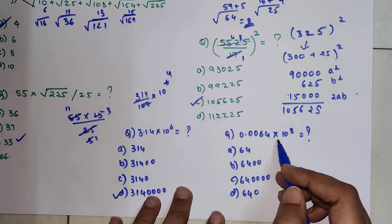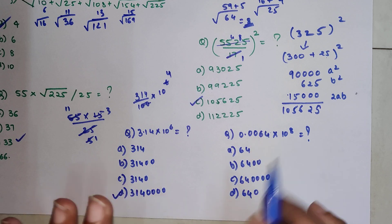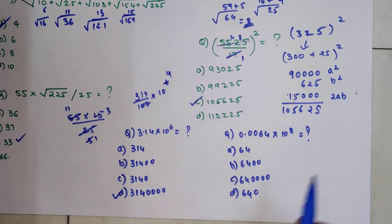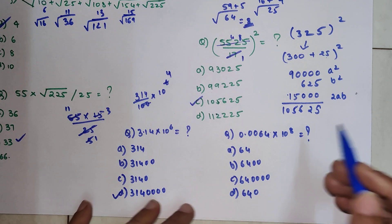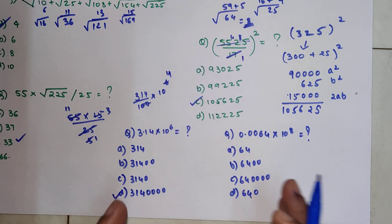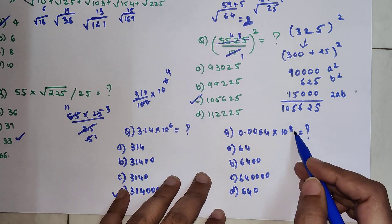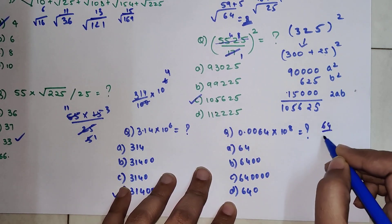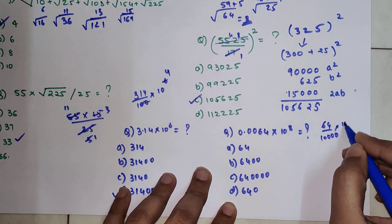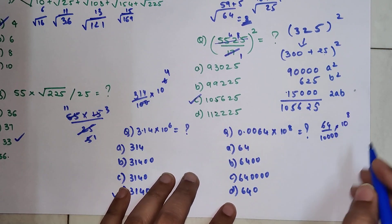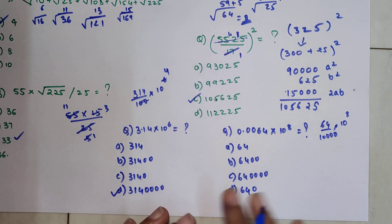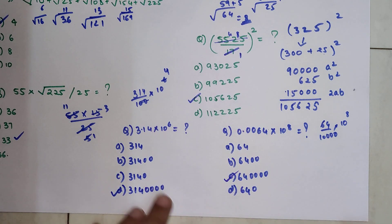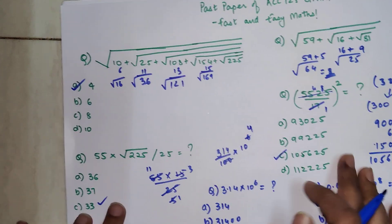Now we have 0.0064 multiplied by 10 raised to 8. Removing the decimal, we get 64 upon 10,000, since there are 4 digits after the decimal point. We also have 10 raised to 8. Since 10,000 is in the denominator it becomes 10 raised to minus 4, so when we reduce 8 by 4 we are left with 10 raised to 4. The final answer is 64 followed by 4 zeros — 640,000.